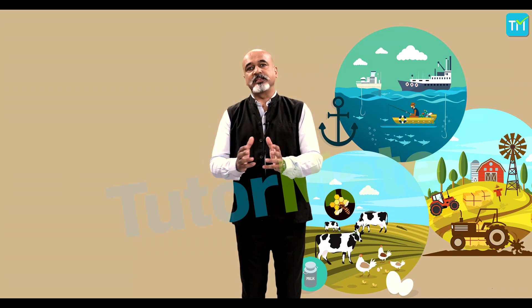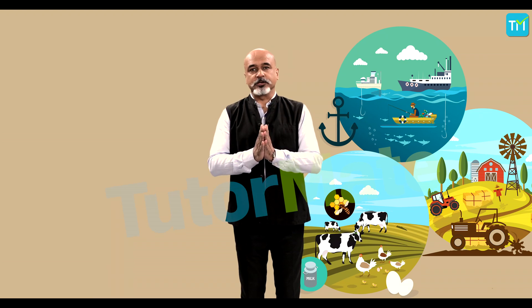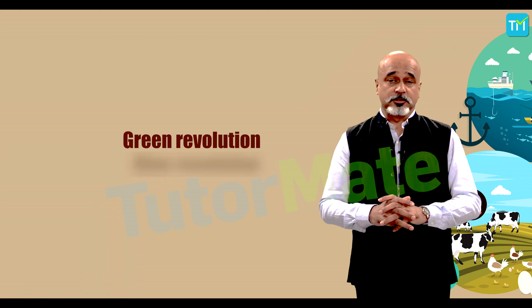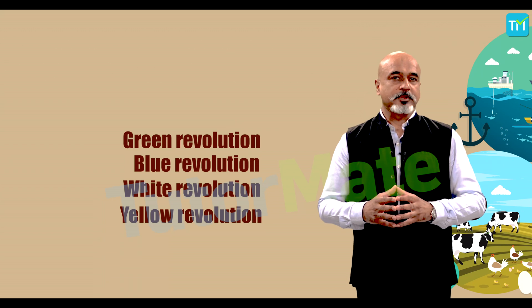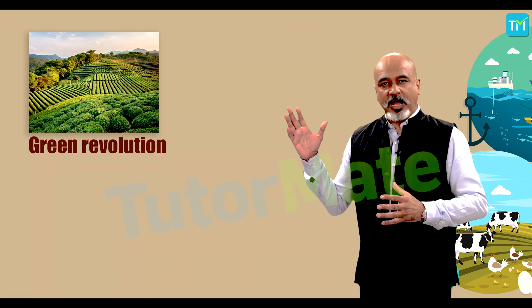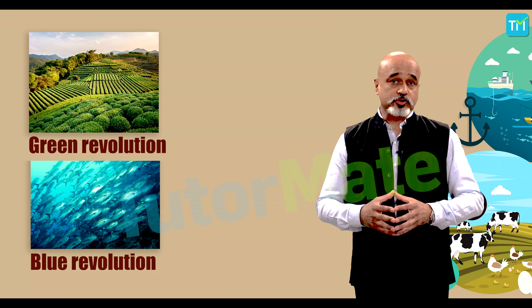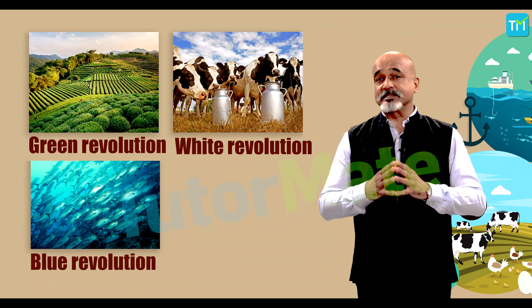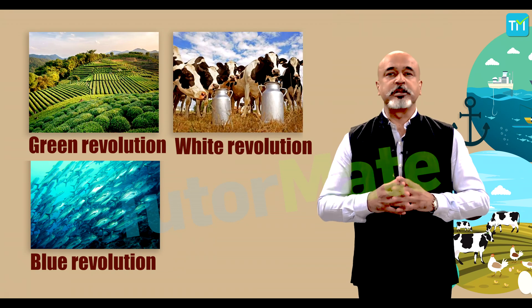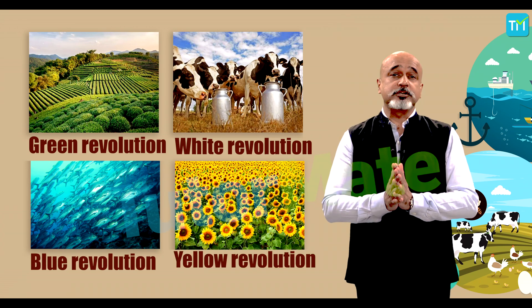India adopted significant policy reforms focused on food grain self-sufficiency. These efforts revolutionized agriculture and animal husbandry through four key revolutions: the Green Revolution for high grain production, the Blue Revolution for enhanced fish production, the White Revolution for increased milk production, and the Yellow Revolution for increased oil production.